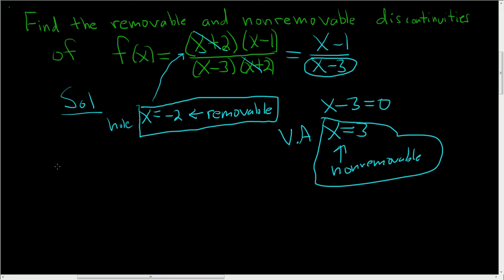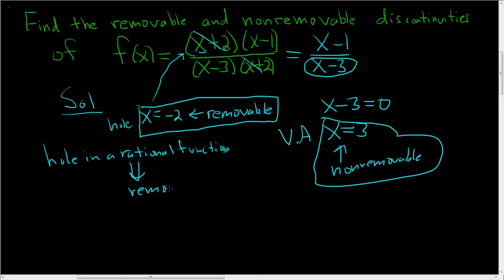So the point is this: if you have a hole in a rational function, it's removable. And vertical asymptotes are always non-removable.